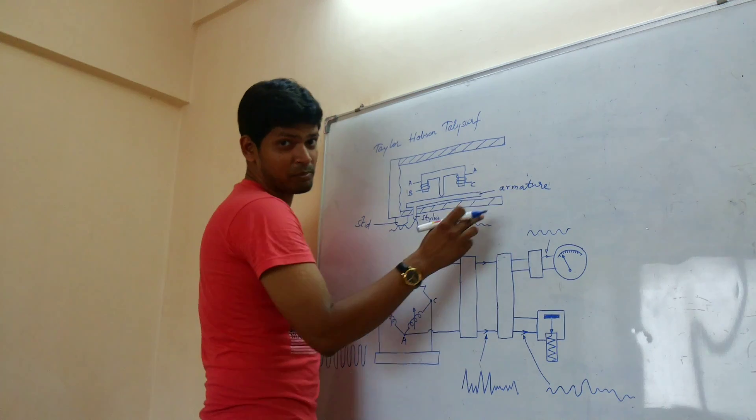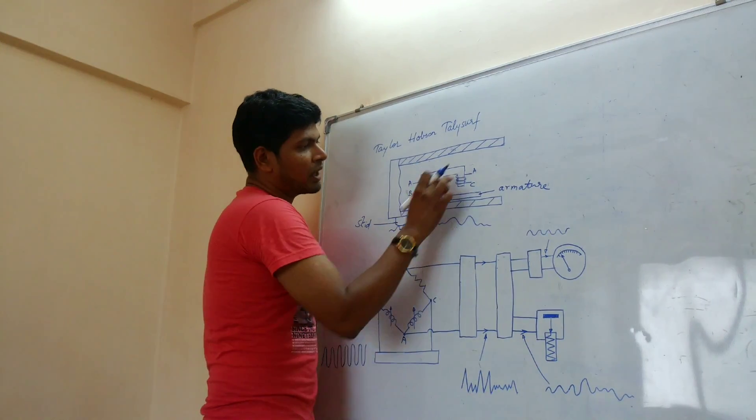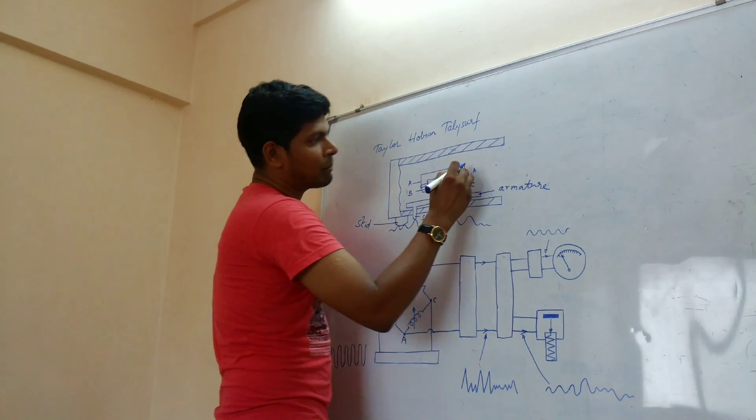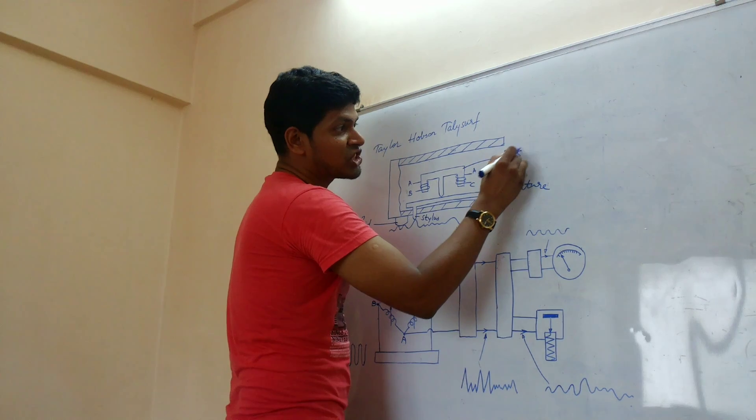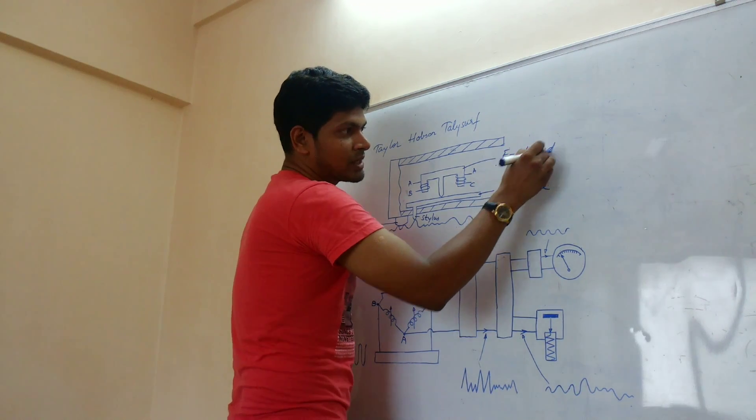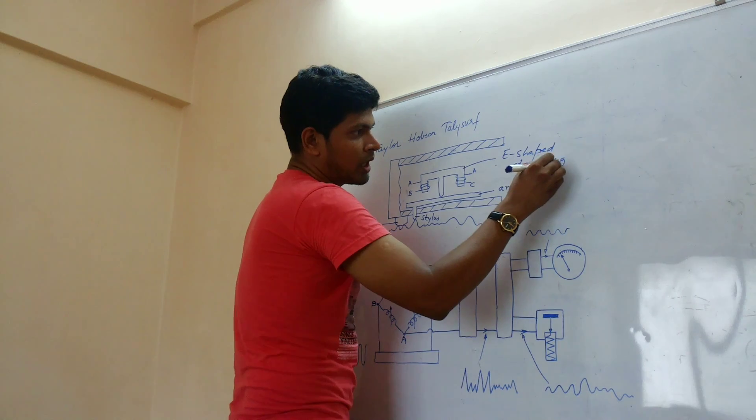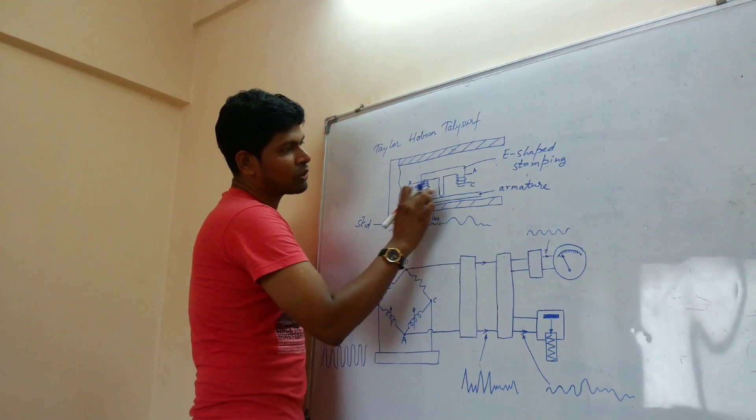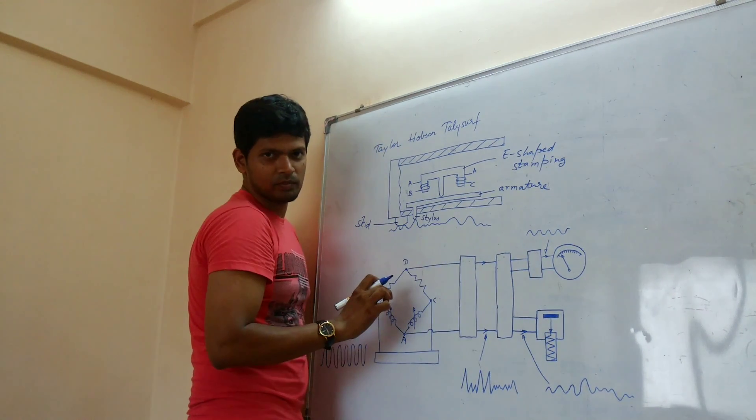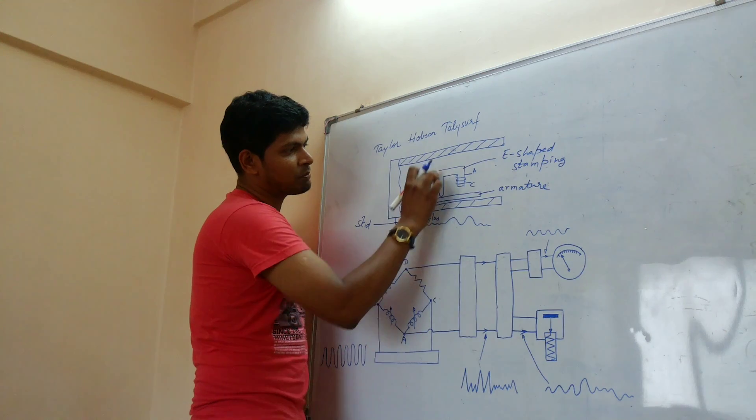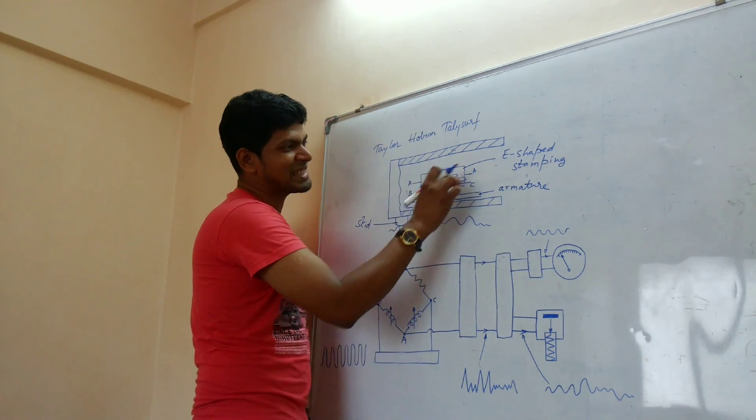And this armature is pivoted at the E-shaped stamping. This is E-shaped stamping. Here you can see there is an air gap and the armature is pivoted on the middle leg of the E-shaped stamping.